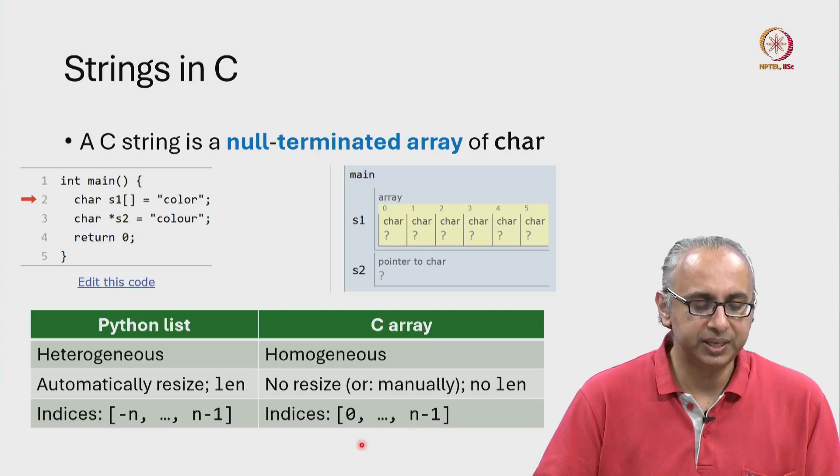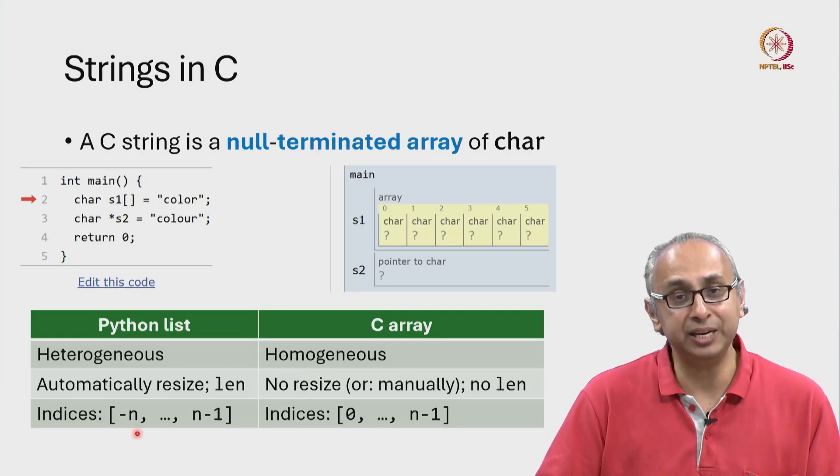Lastly, we have seen that we can have negative indexing in Python lists apart from the normal indexing from 0 up to 1 less than the length.